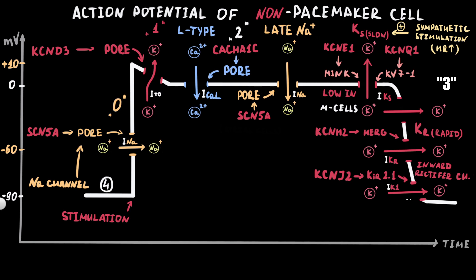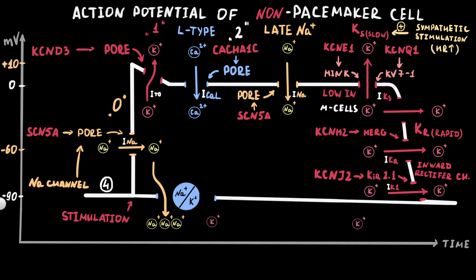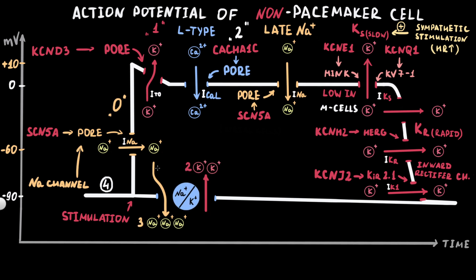Phase III completes the action potential cycle with a return to resting Phase IV, preparing the cell for the next stimulus or depolarization. There are two major exchangers working during the action potential: the sodium-potassium pump and the sodium-calcium exchanger. The sodium-potassium pump moves three sodium ions out of the cell in exchange for two potassium ions moving into the cell. These ion movements generate the outward IP current. Since these movements go against the concentration gradient, they require energy from ATP hydrolysis. A decrease in pump current can cause prolongation of action potential duration.